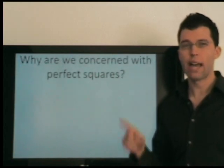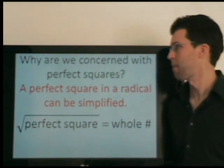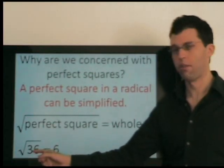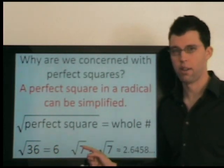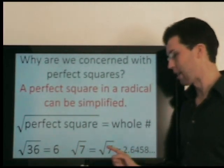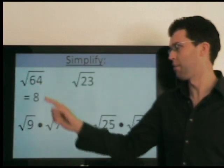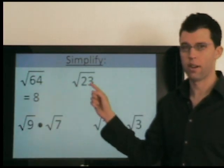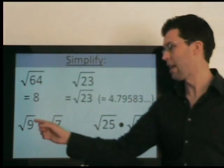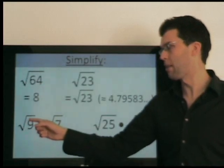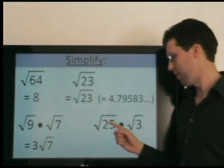Why do we care about perfect squares? Well, if we have a radical with a perfect square, we can simplify it. A radical of a perfect square can be simplified to a whole number. So for example, 36 is a perfect square, so radical 36 simplifies to a whole number. But 7 is not a perfect square, so it just stays radical 7 — this is an exact answer; a decimal would be rounded. Similarly, radical 64 simplifies to a whole number, but radical 23 stays as is. We can also simplify expressions like radical 9 times radical 7, which gives 3 times radical 7, or 5 times radical 3.